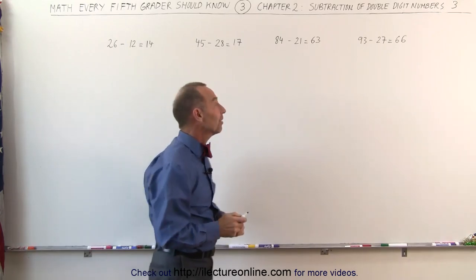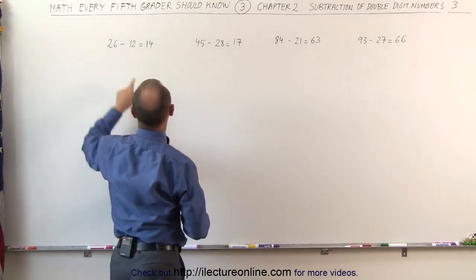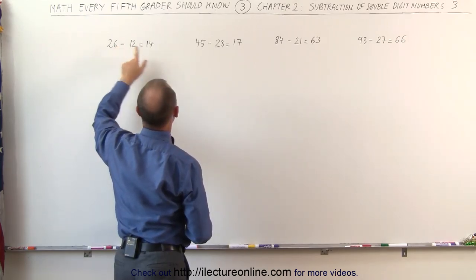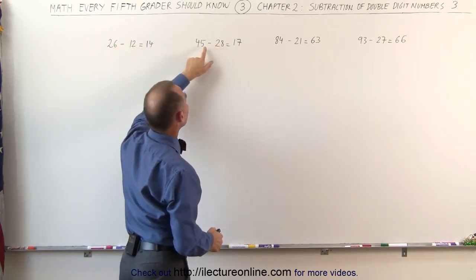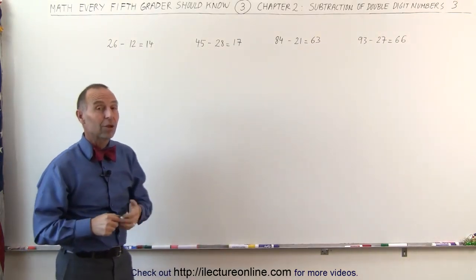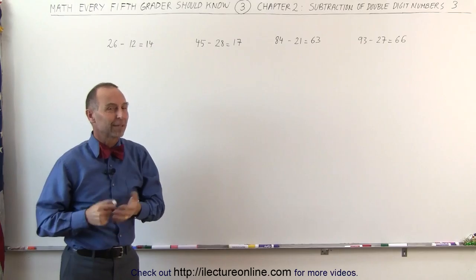And that's how we find the difference between 2 double digit numbers. In one case where the second number is smaller than the one over here. And the other case where this number is bigger than that over there. And those are the two different techniques we use to subtract double digit numbers from one another. And that's how it's done.